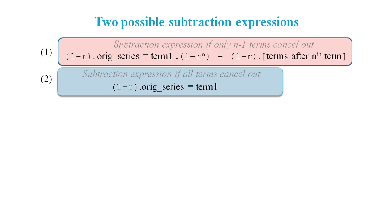Whereas in the original proof, where we assume all terms cancel out, we get this expression. 1 minus r times the original series equals the first term of the original series.